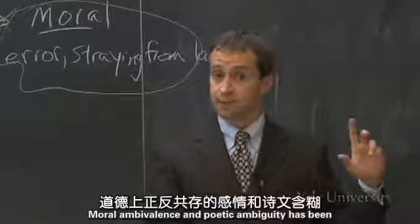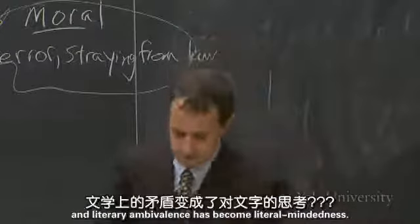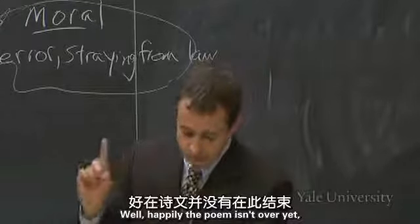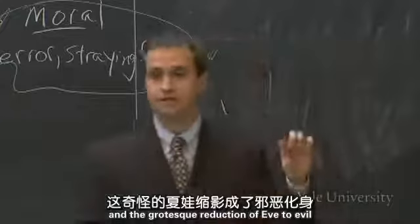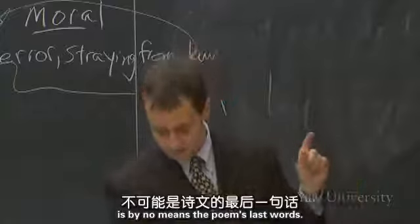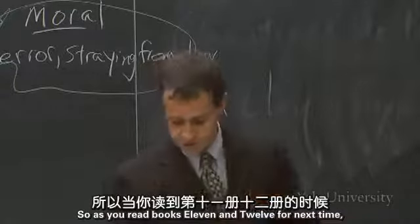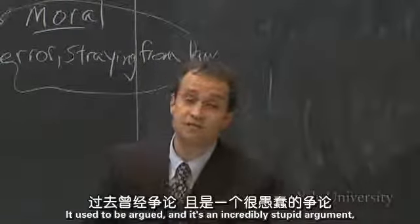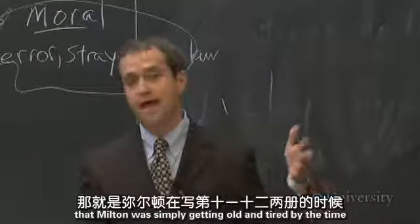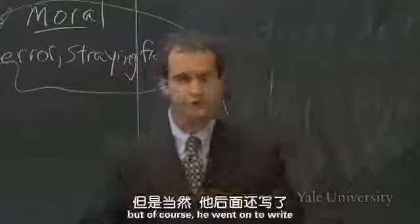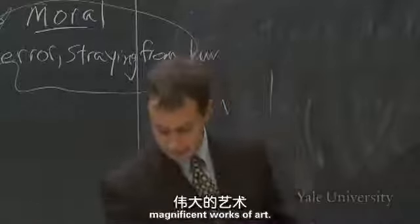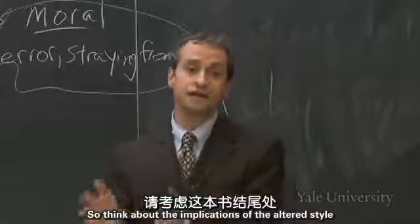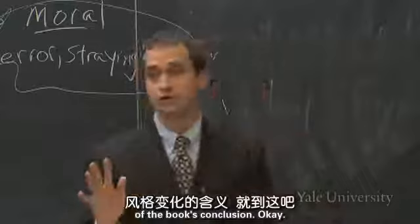The poem seems to go as far as it can in the absolute ossification of a character into an empty embodiment of moral evil. Moral ambivalence and poetic ambiguity has been transmogrified into moral definitiveness, and literary ambivalence has become literary literal-mindedness. But happily, the poem isn't over yet, and the grotesque reduction of Eve to evil is by no means the poem's last words. As you read Books 11 and 12 for next time, think about the literary texture of those books as you compare it to the earlier books. There is a marked change in the verbal character of the last two books of Paradise Lost, so think about the implications of the altered style of the book's conclusion.